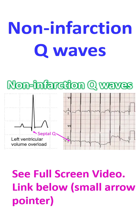The so-called septal Q waves in lateral leads indicate initial left-to-right activation of the interventricular septum. This is because the impulse from the AV node travels faster down the left bundle branch and activates the septum from left to right. Septal Q waves can become prominent in left ventricular volume overload situations like chronic severe aortic regurgitation.